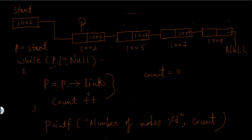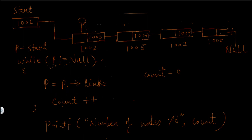So these two statements will get executed. p->link means the link part of this node, which is the address of the next node. So the address of the next node — which according to this example is 1005 — will be assigned to p, so p now means this next node. Then this statement will increment the value of count by 1, so count will become 0 plus 1 equals 1.